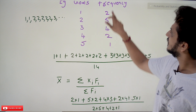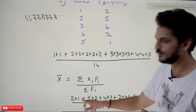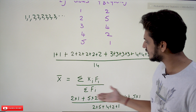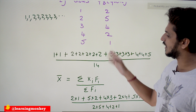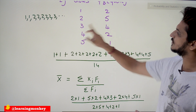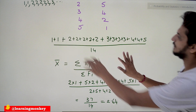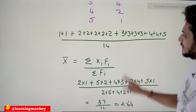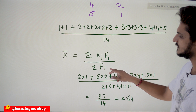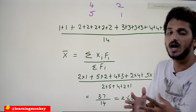With goals as xi and frequencies as fi, the formula becomes: x̄ = Σ(xi · fi) / Σfi. That gives us (2×1 + 5×2 + 4×3 + 2×4 + 1×5) / (2+5+4+2+1) = 37/14 ≈ 2.64. This means most players are scoring around 3 goals — that is the central tendency value.